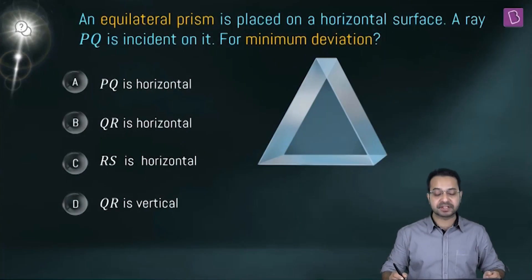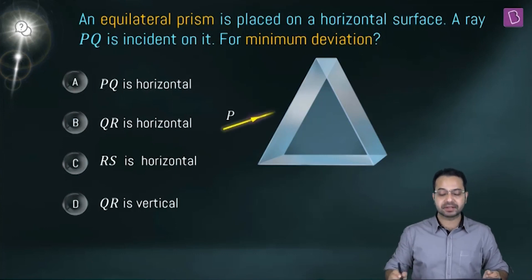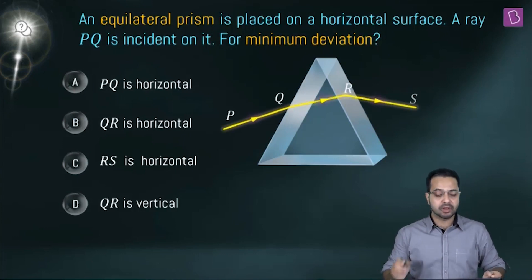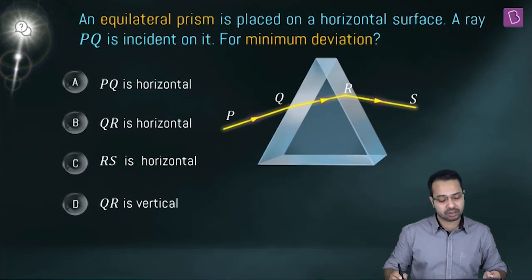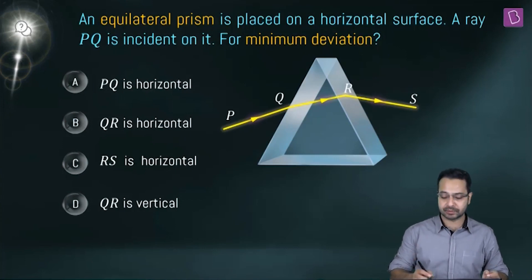An equilateral prism is placed on a horizontal surface. A ray PQ is incident on it for minimum deviation. PQ is horizontal, QR is horizontal, RS is horizontal — or the question asks whether QR is vertical.